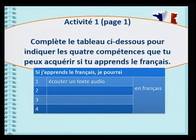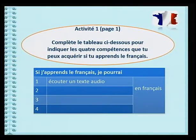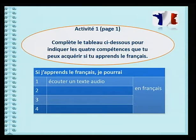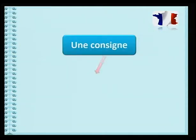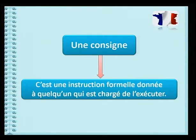Tu vois, quand tu ouvres ton manuel, les consignes se trouvent généralement au début des activités. Mais très souvent, on les voit sans pour autant porter une grande attention. Regardons par exemple la première activité de ton manuel qui se trouve à la première page. Tu vois cette phrase qui se trouve au début de l'activité? Exactement, celle-là. Complète le tableau ci-dessous pour indiquer les quatre compétences que tu peux acquérir si tu apprends le français. Eh bien, c'est cela la consigne. Cette phrase, c'est l'instruction qui t'est donnée au début de ton activité pour que tu saches ce que tu devras faire comme travail.